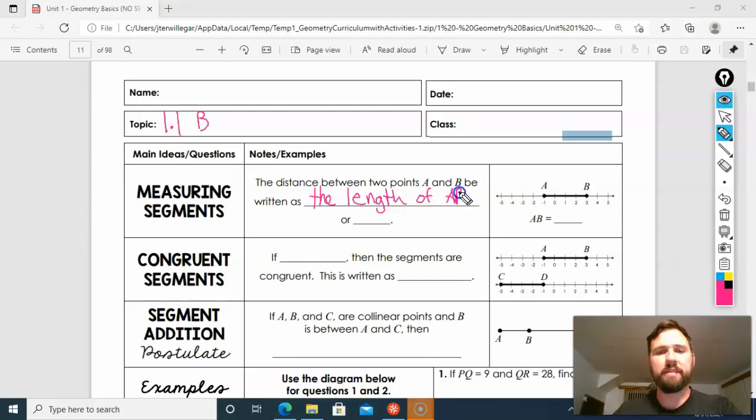Remember, AB with a hat means the segment AB. Or if you just write the endpoints of a segment, that's implied length. So if you just see the two letters, the two endpoints without the little hat on it, that means you're looking for the number, the measure, the length of that line segment.